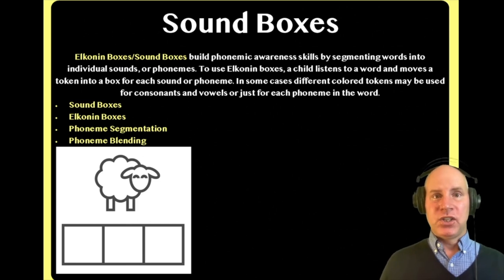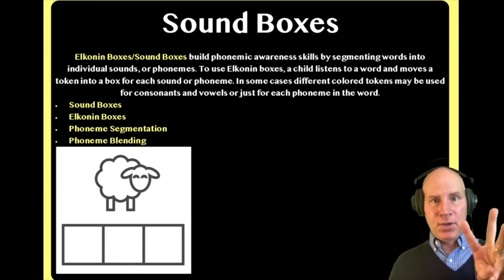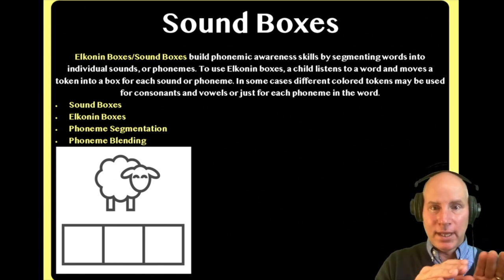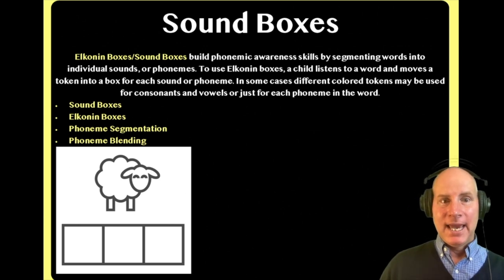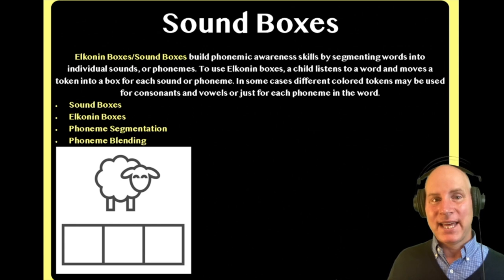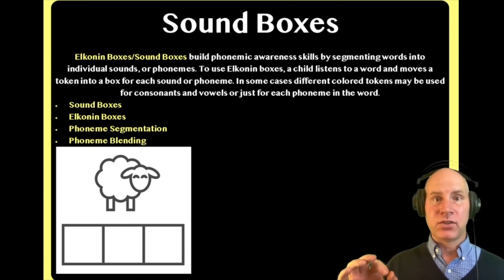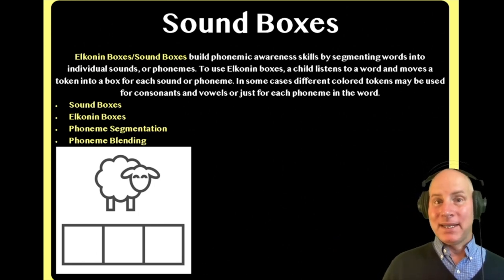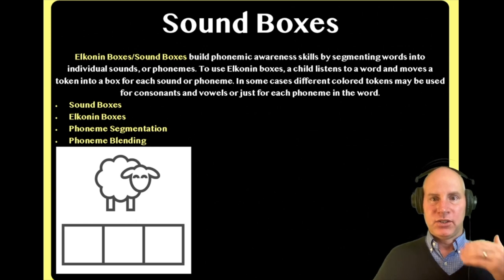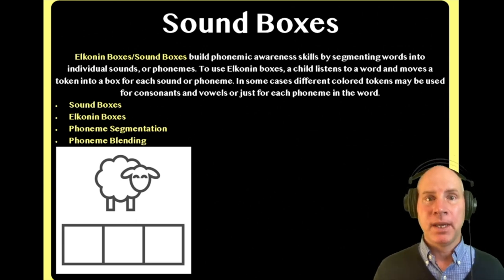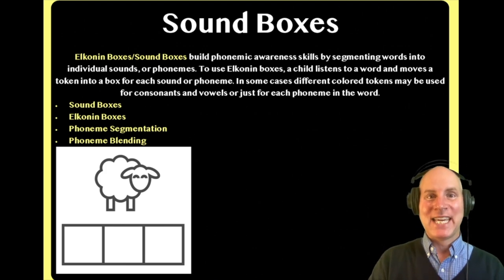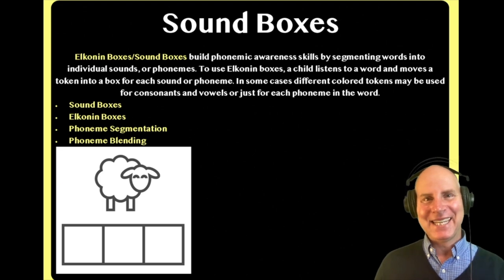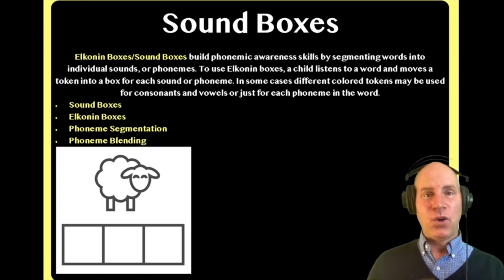For example, the word 'sheep' has three sounds. Notice this activity does not involve any letters — there are no letters, and the child doesn't necessarily have to write them. Sometimes they use circles or pegs to put in the boxes. There's a picture, and the child or teacher says the word out loud — 'sheep' — and the child is asked to segment the sounds they hear, using the boxes as a graphic organizer to isolate the distinct phonemes in the word.